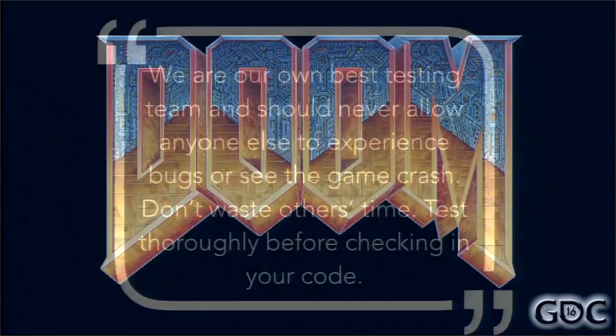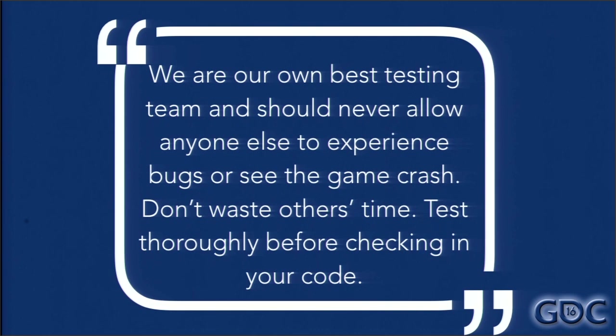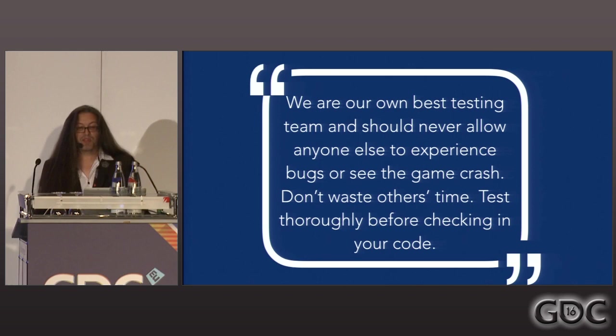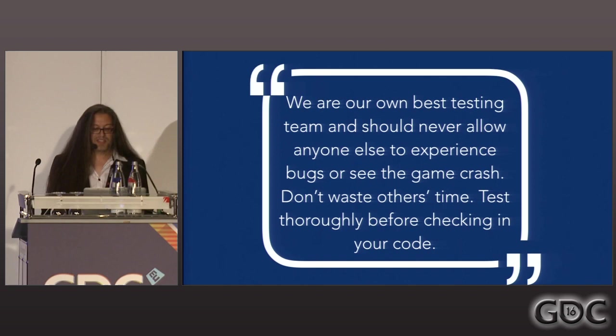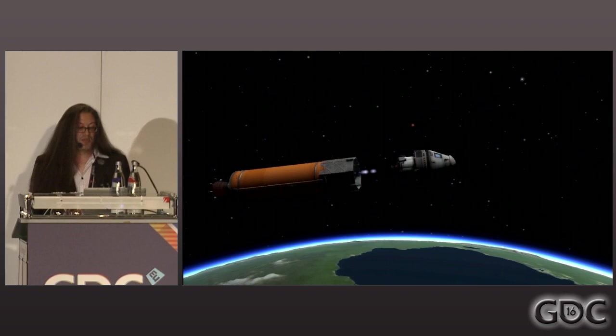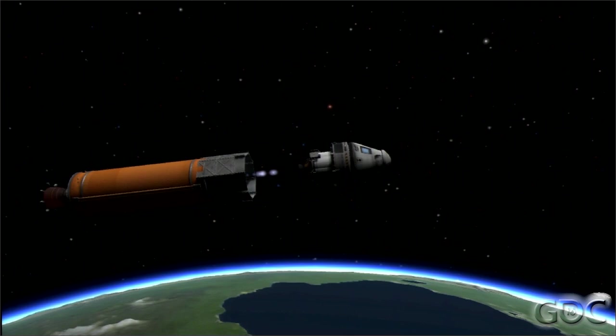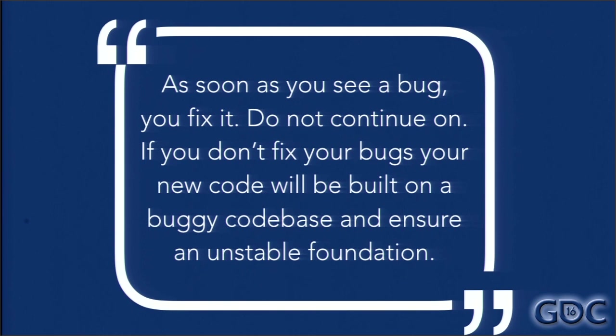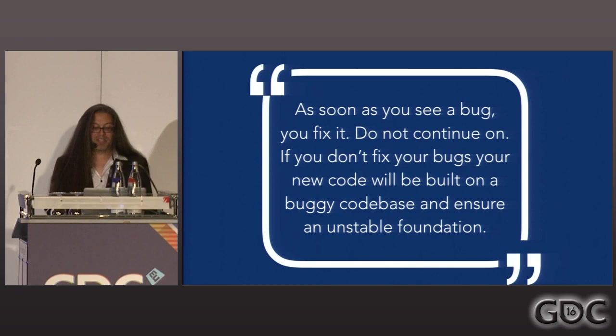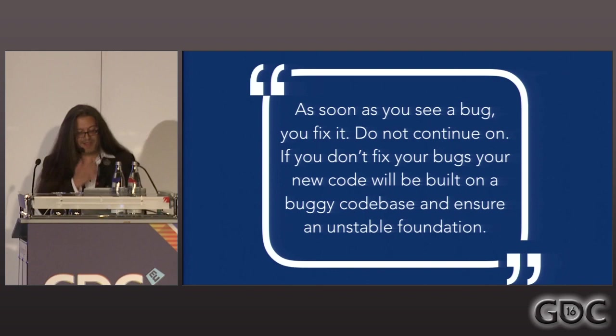So John Carmack spent some months thinking about how more advanced the new engine should be for the game that we decided to call Doom. Based on the rapid development of our previous games, we came up with another important principle: we are our own best testing team, and we should never allow anyone else to experience bugs or see the game crash. Don't waste other people's time. Test thoroughly before checking in your code — no throwing it over the fence for testers to find, put in a database, and fix it later. It's a wasteful cycle. As soon as you see a bug, you fix it. Do not continue on. If you don't fix your bugs, your new code will be built on a buggy code base and ensure an unstable foundation.